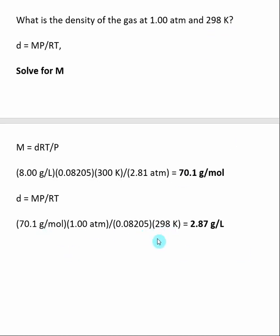So I plug the values in and I do the calculation. I get at this new temperature and pressure the gas will have a density of 2.87 grams per liter. So remember I know the density of the gas is going to be in grams per liter in this case.